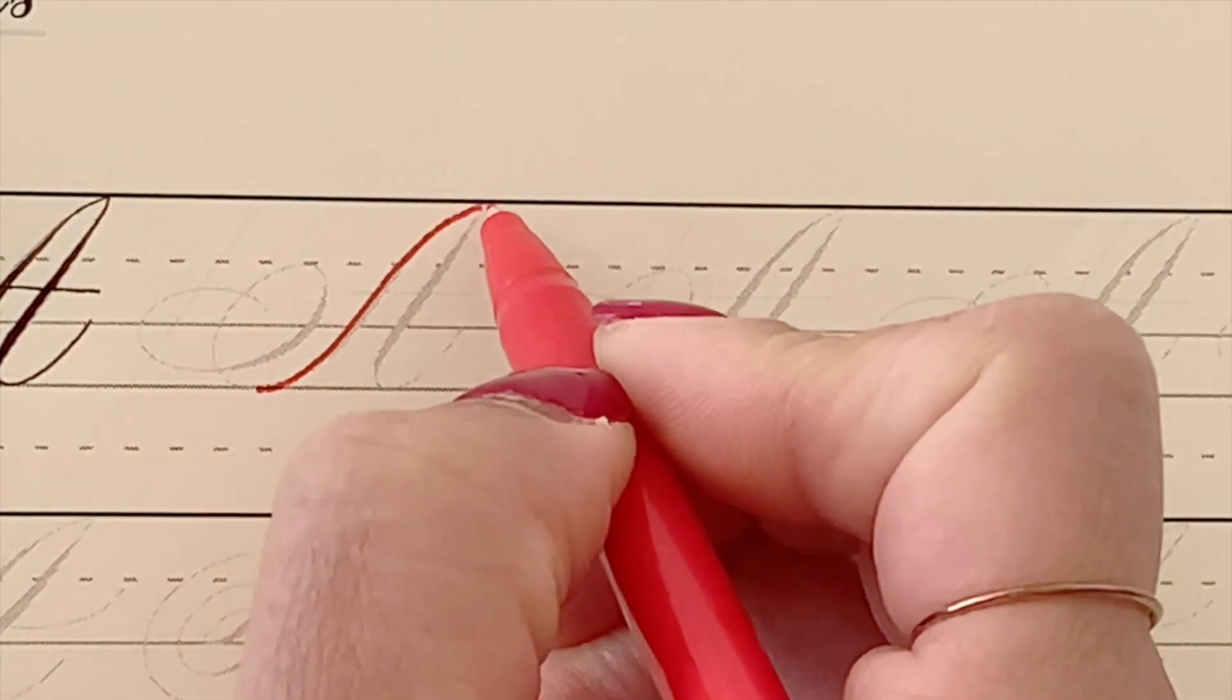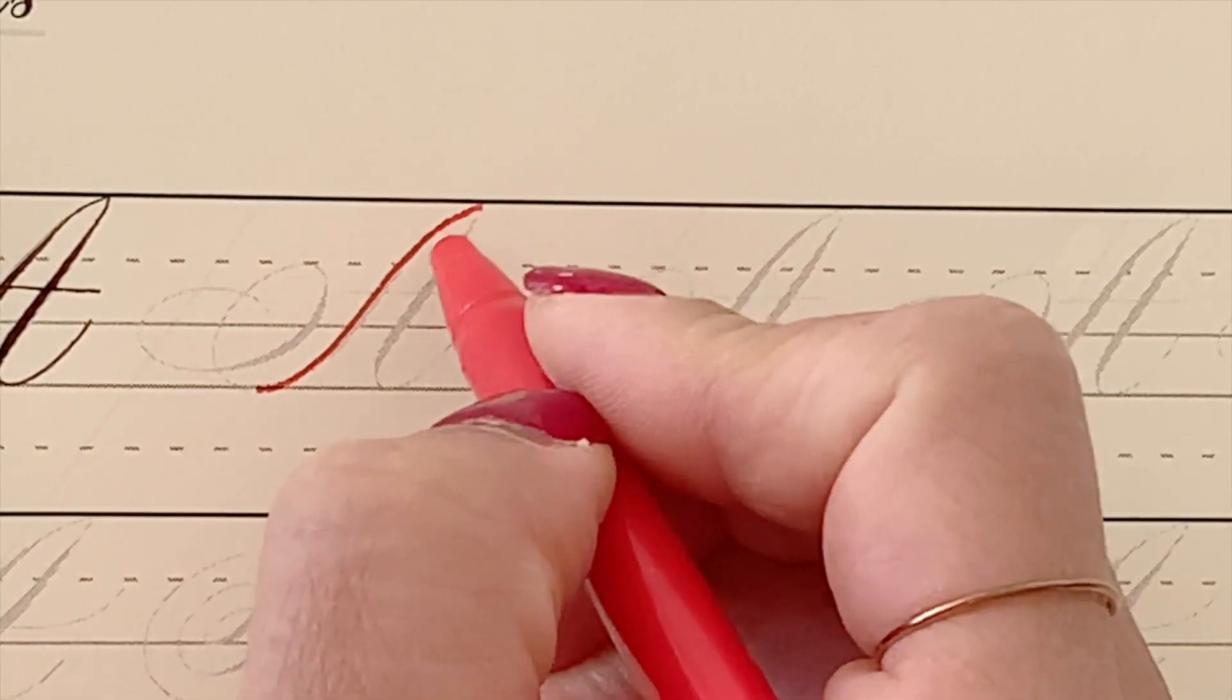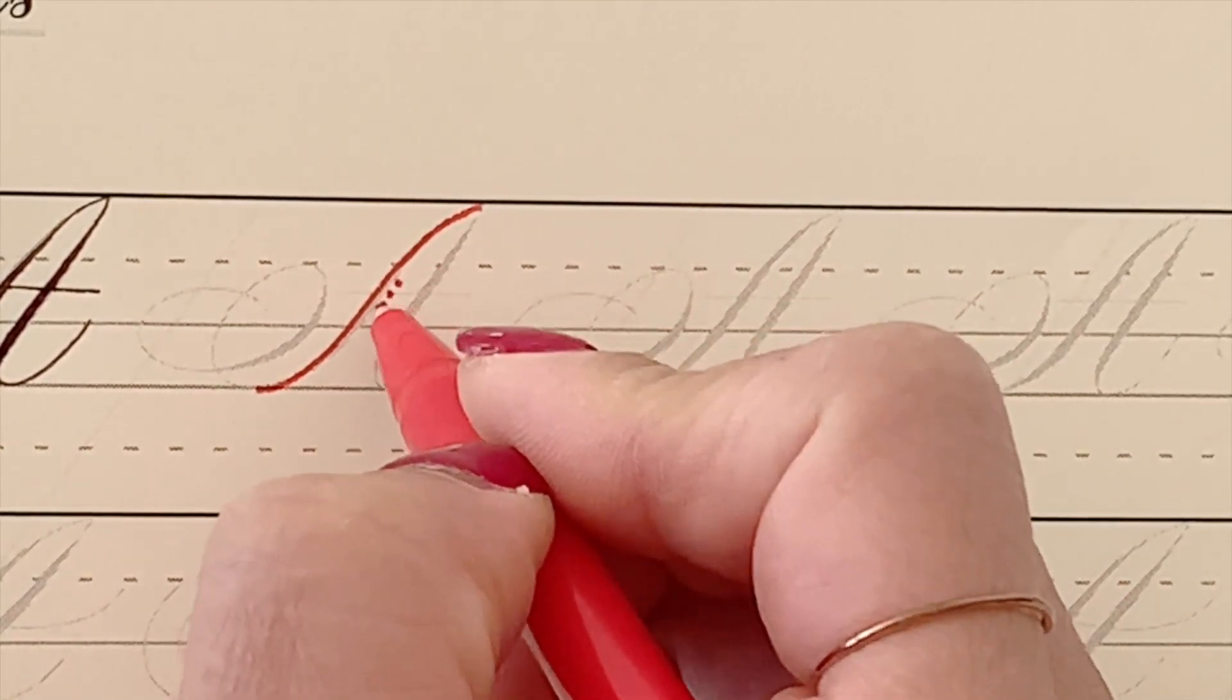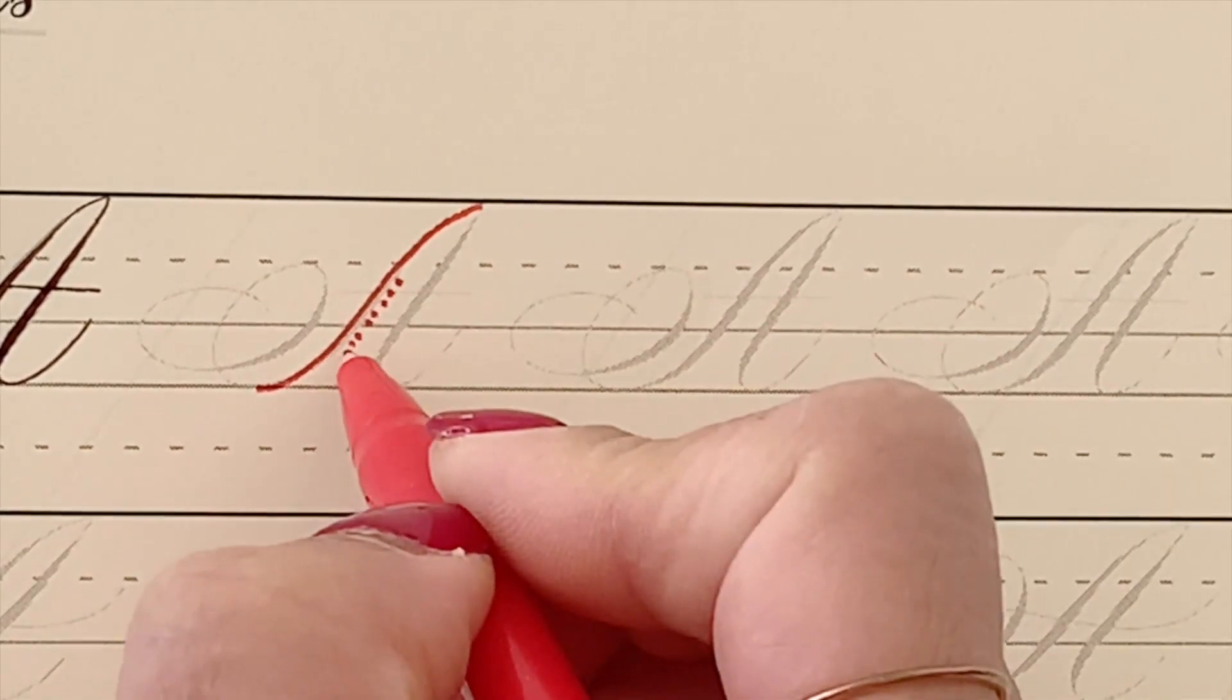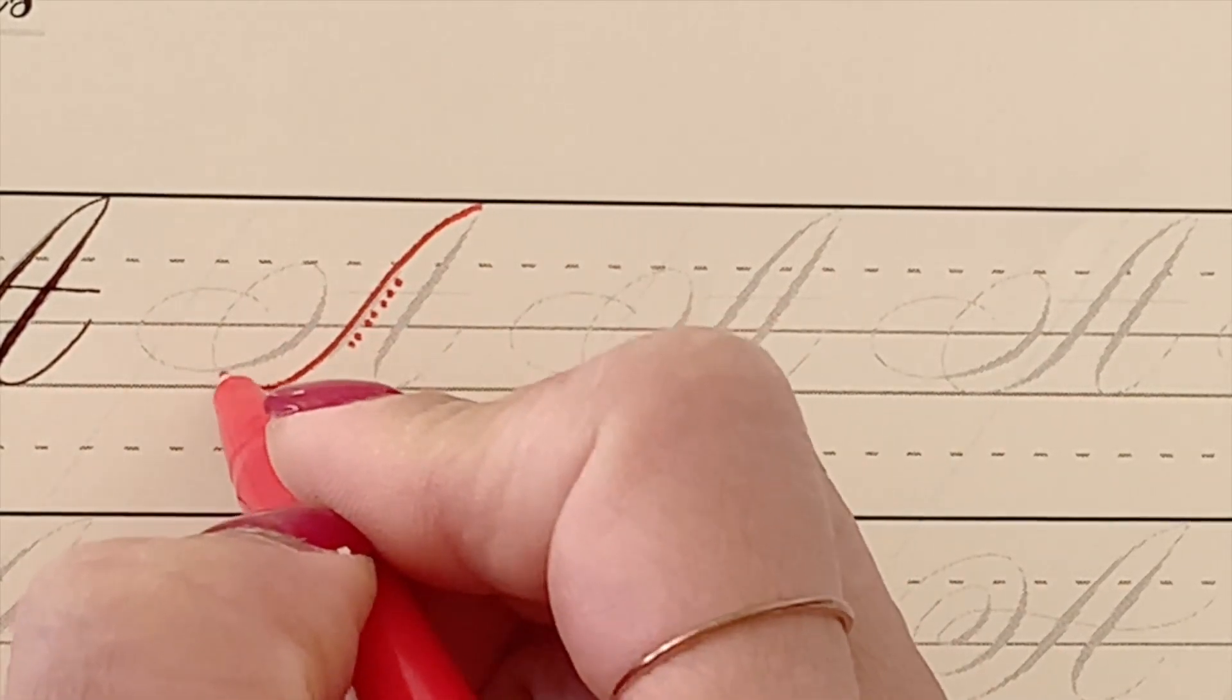You will notice that this is the S curve. Okay, so you start light pressure, meaning there's basically no pressure here. But you add a little bit more in the center, and back to the hairline.